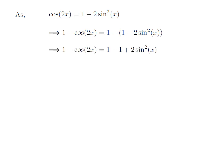This implies 1 minus cosine of 2x is equal to 1 minus 1 plus 2 times square of sine of x.